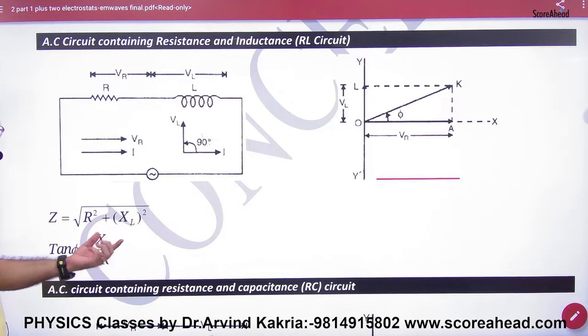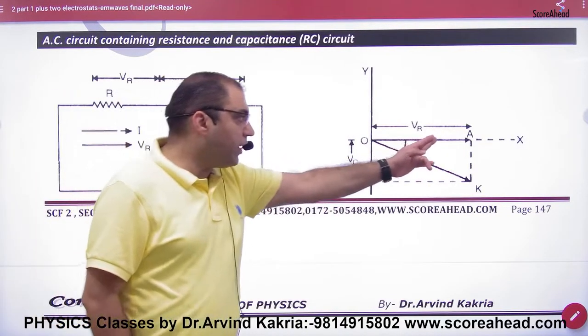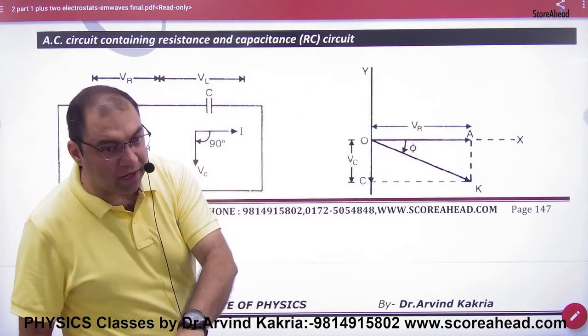XC and VC, and this is the AC circuit containing R and C. So this time, because VC and VR are two terms, the diagram will not be up, the diagram will be down. Why?